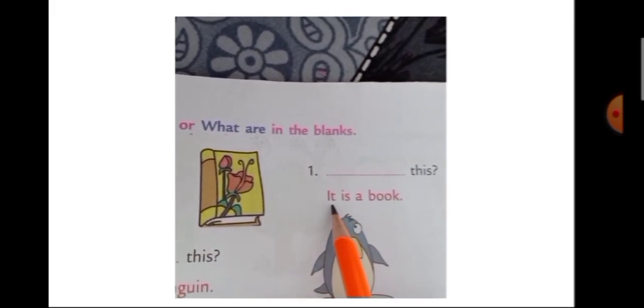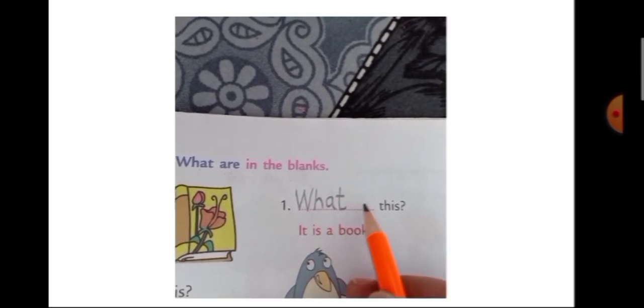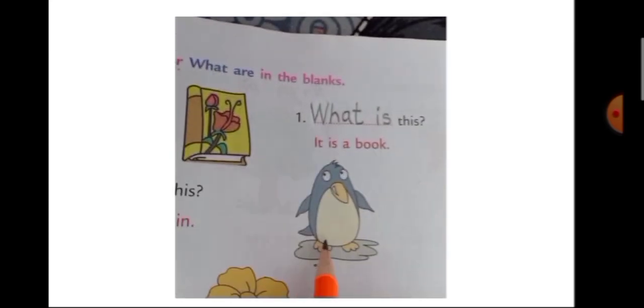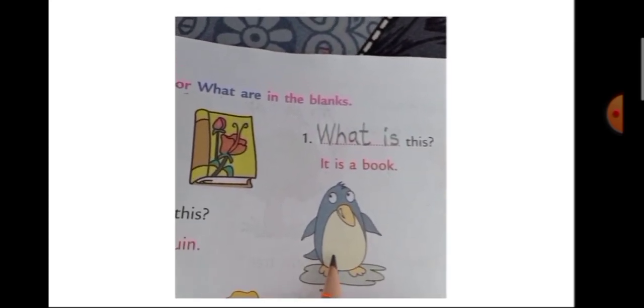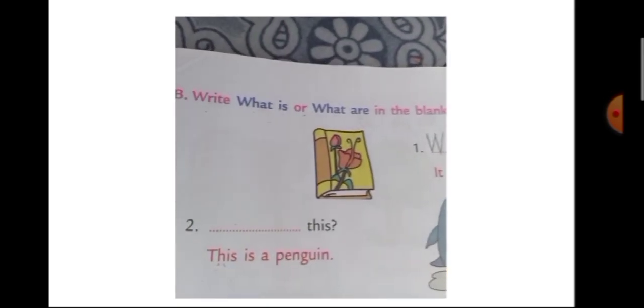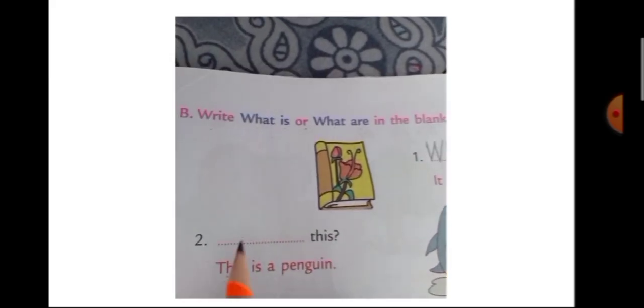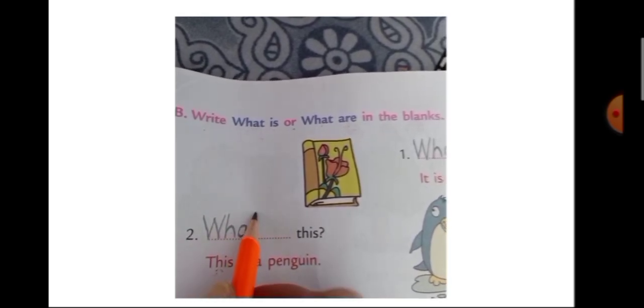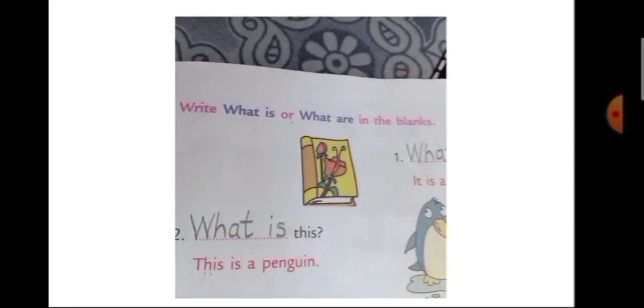The answer will be: It is a book. So let's write here — Capital W-H-A-T — What, I-S — Is. What Is This? Here you can see the picture of a penguin, a single penguin. So again, how will you ask the question? What Is This. Right — This is a penguin. So write: W-H-A-T — What Is This.